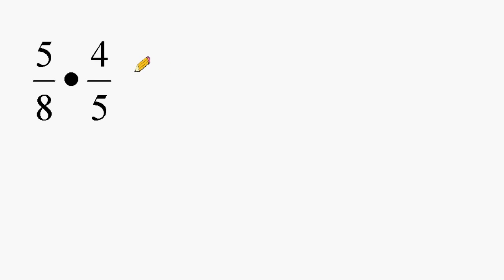One way to do this problem is to simply multiply the numerators together to get your numerator. In this case, we have 5 times 4, which produces 20, and for the denominator, we have 8 times 5, which produces 40.